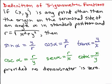Here we have the definition of the trigonometric functions. If x, y is any point other than the origin on the terminal side of an angle alpha in standard position, and r equals the square root of x squared plus y squared, then here we go. The sine of alpha is y over r, the cosine of alpha is x over r, the tangent of alpha is y over x, and then we have the reciprocal identities. The cosecant of alpha, that's the reciprocal of sine, r over y. The secant of alpha, that's the reciprocal of cosine, r over x. And the cotangent of alpha, that's the reciprocal of tangent, which is x over y.